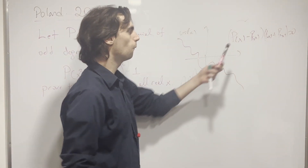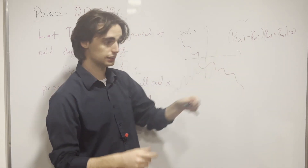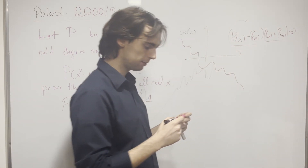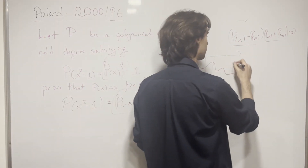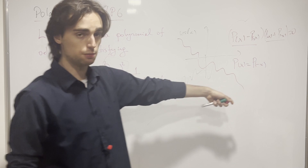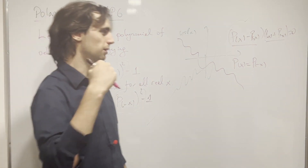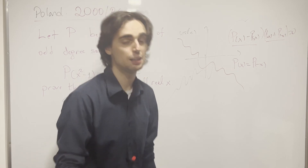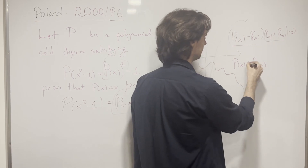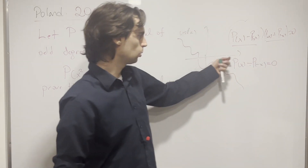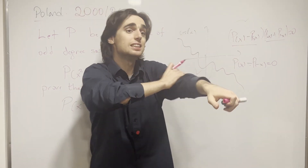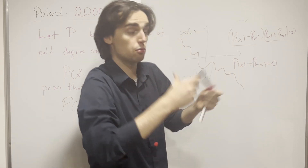This is true for all x. It means that either the first factor or the second factor is zero infinitely many times. So either P(x) equals P(negative x) for infinitely many x, or P(x) equals negative P(negative x) for infinitely many x. Since these are polynomials, if any such expression is zero infinitely many times, we can call it a polynomial q(x) with infinitely many zeros, meaning q is identically zero — so the identity holds for every single x.